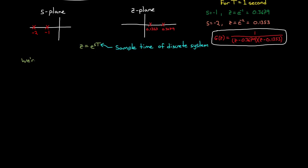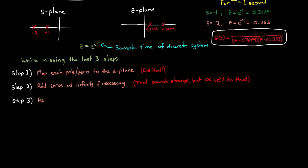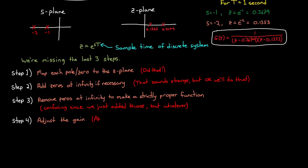The complete four step process is this. Step one, map each pole and zero to the z-plane. Done. We did that. Step two, add zeros at infinity if necessary. Okay, that's strange. Makes no sense, but we'll do that anyway. Step three, remove zeros at infinity to make a strictly proper function. Well, that's just confusing since we just added some of those, but we'll go along with it. And step four, adjust the gain. Ah, yeah, the DC gain that we talked about before. Each of these new steps will make more sense when we walk through them. So let's do that now.